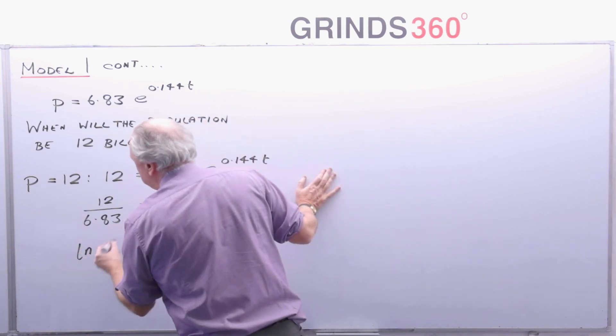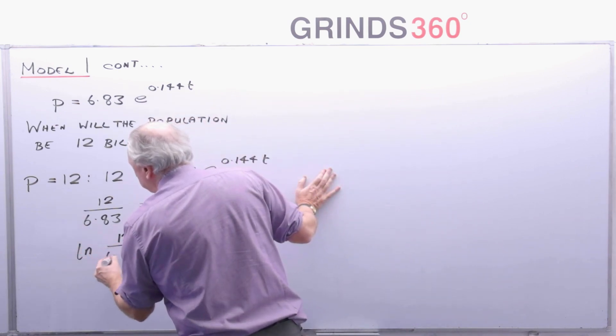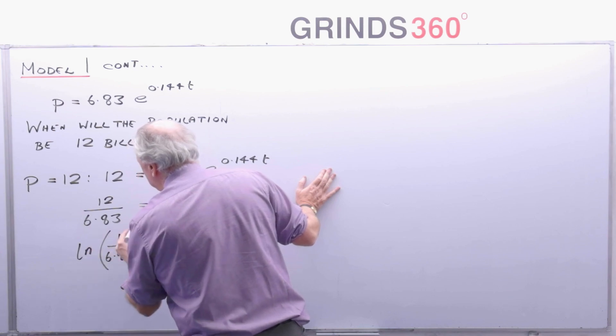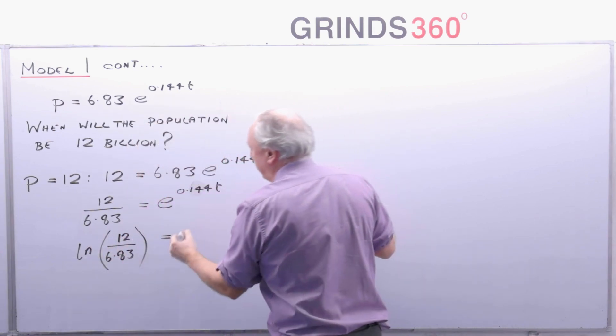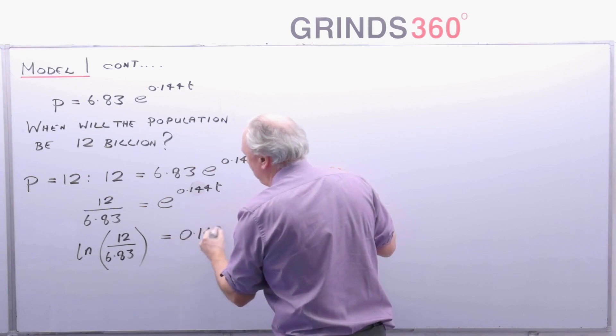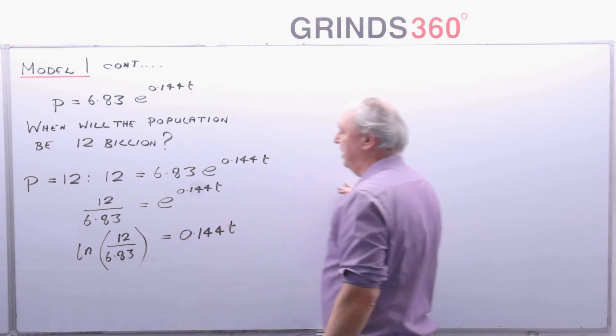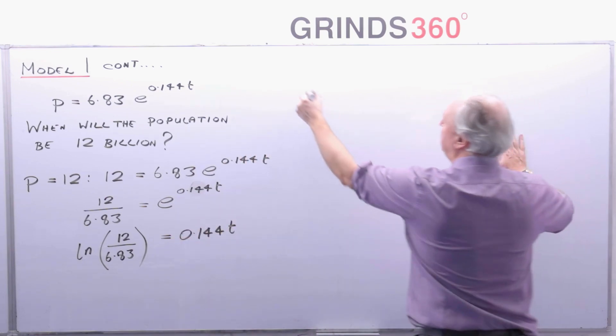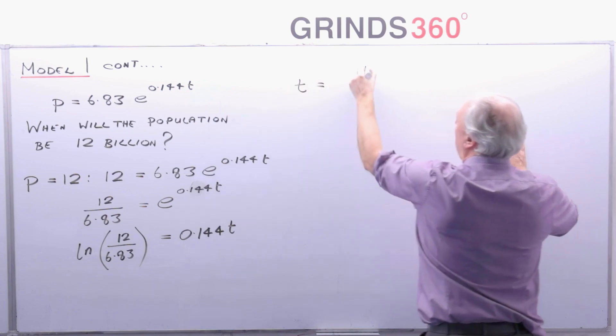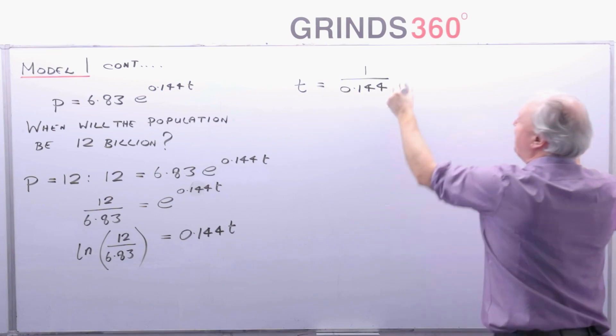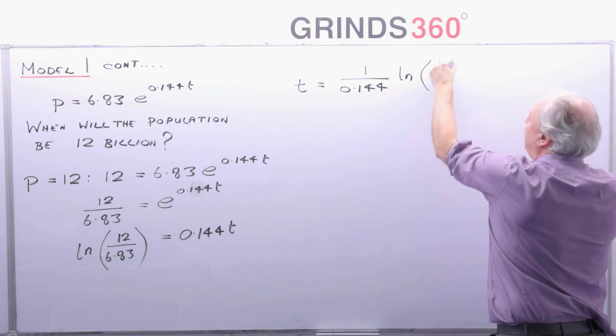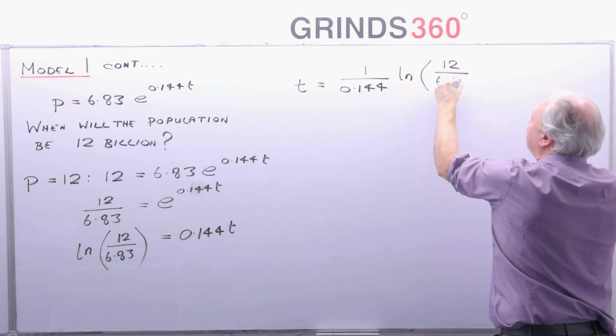So the log of 12 over 6.83 is equal to, get the log of this side, and you're left with 0.144t. And therefore, the time t is equal to 1 over 0.144 by the natural log of 12 divided by 6.83.